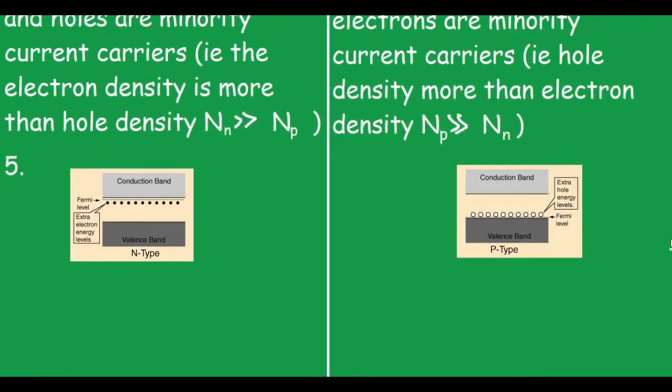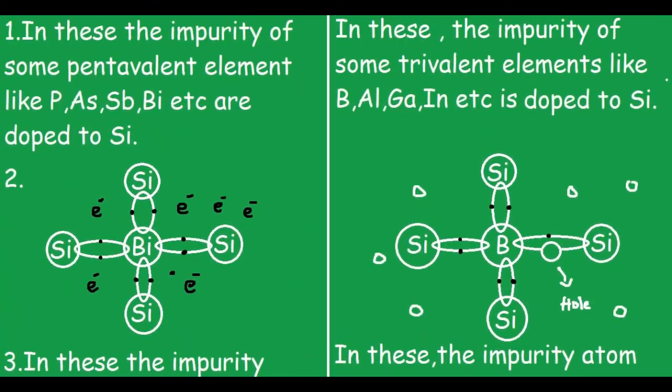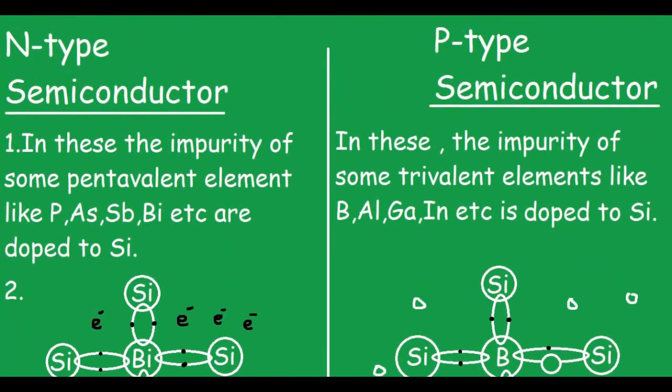So these were the five important differences between N-type and P-type semiconductors. Thank you.